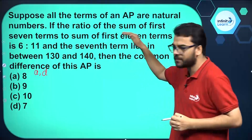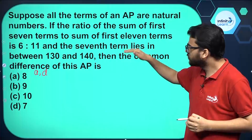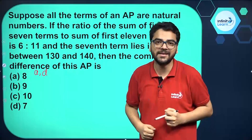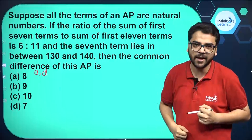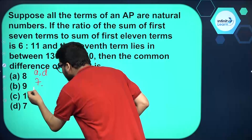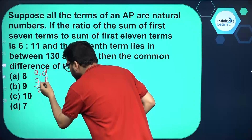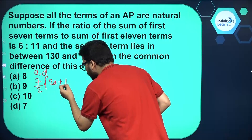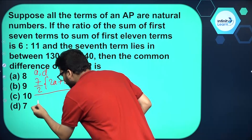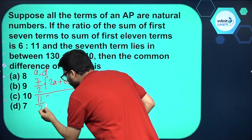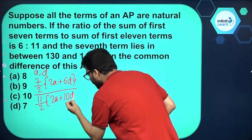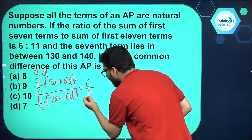The ratio of the sum of the first 7 terms to the sum of the first 11 terms is given. The sum of the first n terms of an AP is n/2 into (2a + (n−1)d). So the sum of the first 7 terms is 7/2 into (2a + 6d), and in the denominator the sum of the first 11 terms is 11/2 into (2a + 10d), and that ratio equals 6/11.